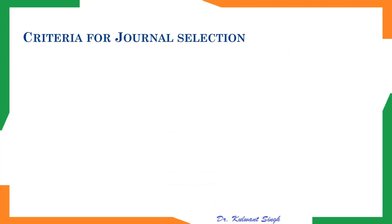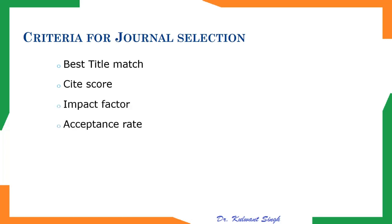Criteria for journal selection — on which parameters should we select a journal? First is best title match. Second is site score. Third is impact factor. Fourth is acceptance rate. Fifth is submission to decision time. These are the main criteria for journal selection. You may select a journal as per your choice — by best title match, site score, impact factor, acceptance rate, or submission to decision time as per your own requirement.